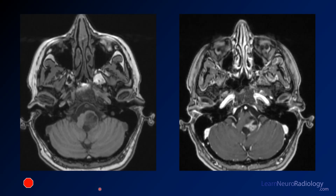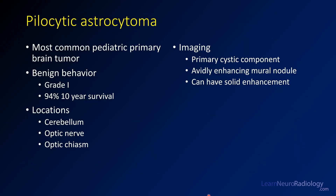Here you have the pre- and post-contrast images. On pre-contrast, you see a relatively well-marginated T2 hypointense mass, less intense than the surrounding cerebellum or brain stem. On post-contrast imaging, you do have some enhancement — a little nodular area of enhancement along the medial aspect of this tumor. What we're dealing with in this case is a pilocytic astrocytoma.